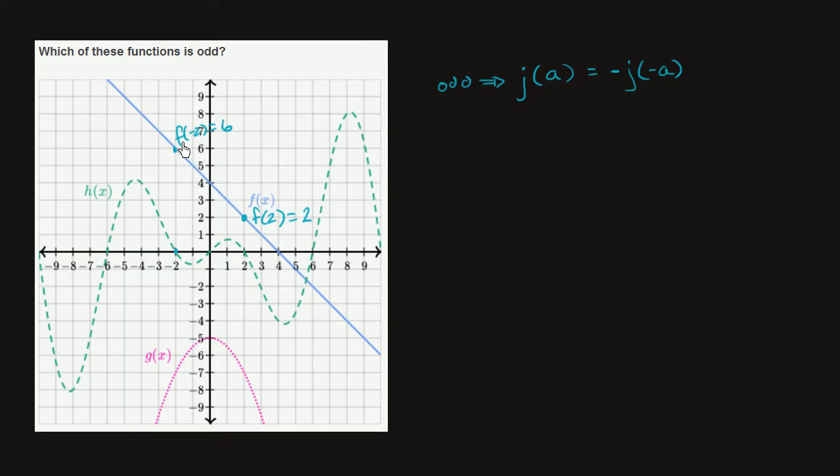In order for this to be odd, f of negative 2 would have had to be equal to the negative of this. Would have had to be equal to negative 2. So f of x is definitely not odd. So all I had to do is find even one case that violated this constraint to be odd, and so I can say it's definitely not odd. Now let's look at g of x.